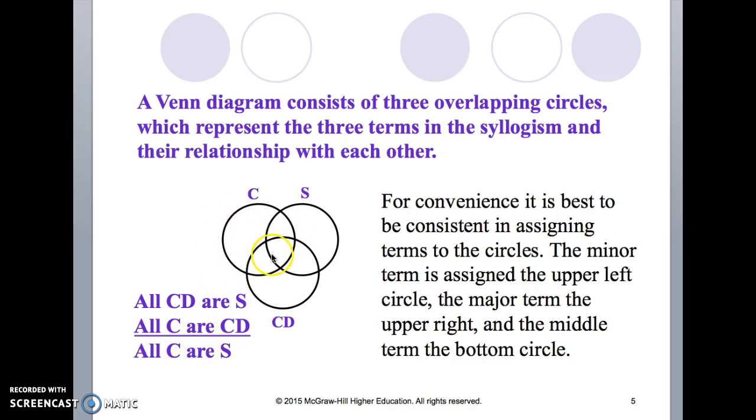The first circle that you put in the upper left is the subject of the conclusion. The next one overlapping to the right is the predicate, the major term.